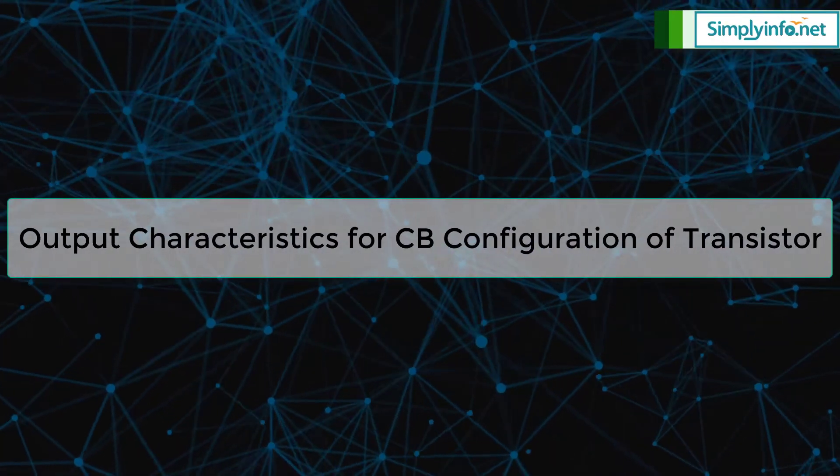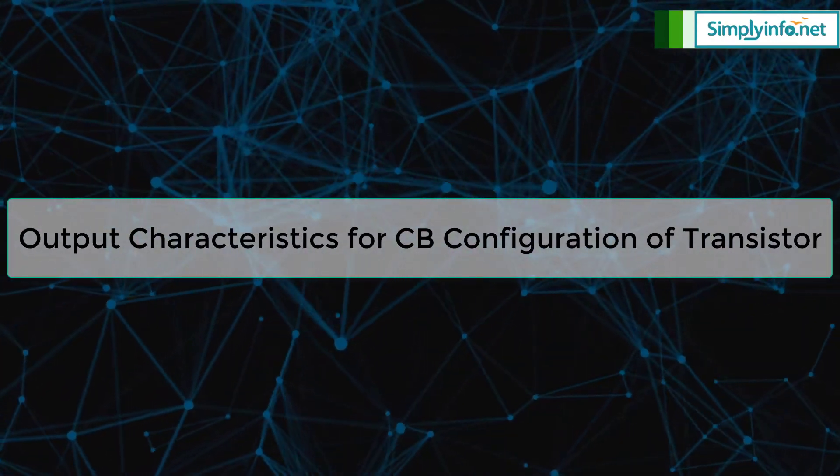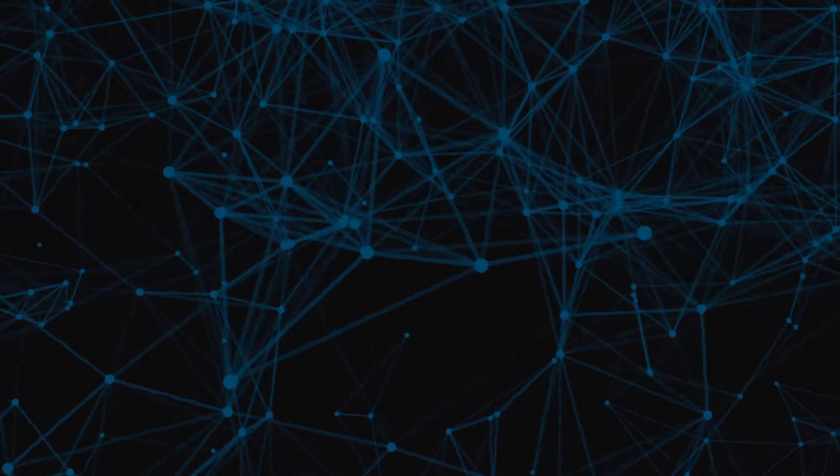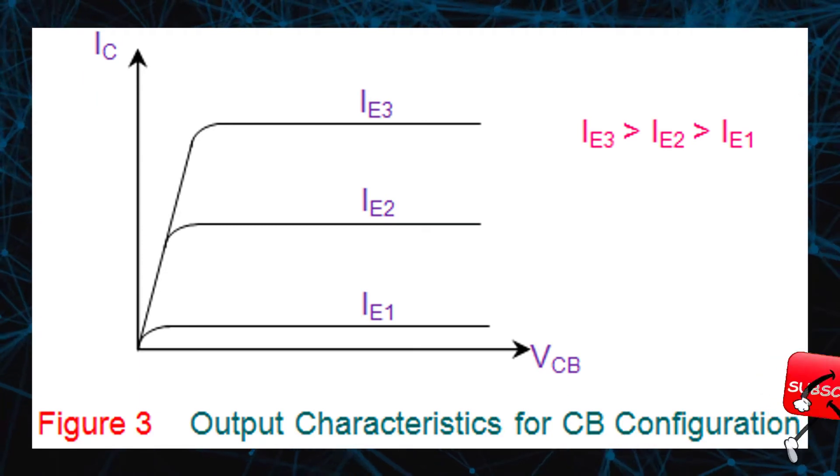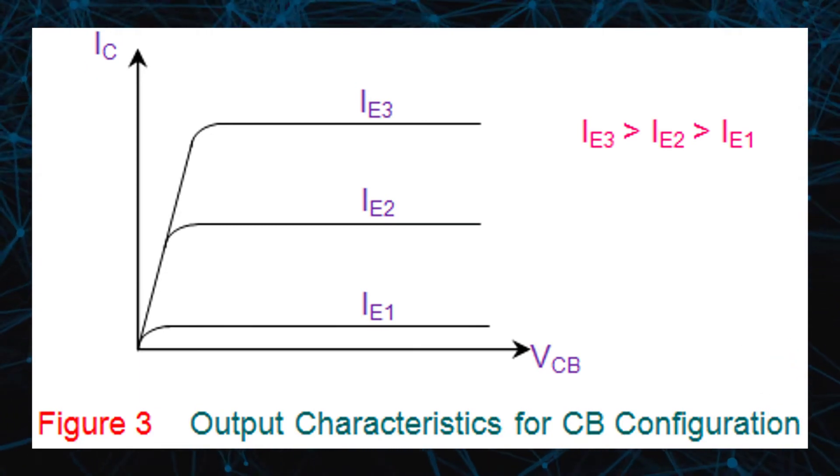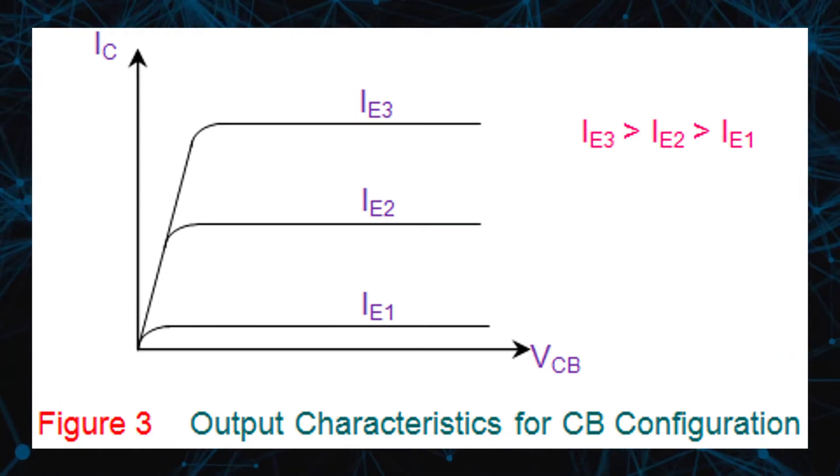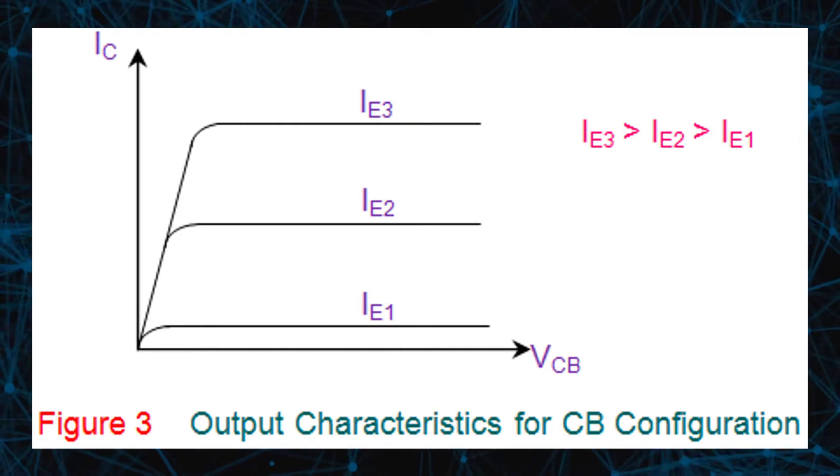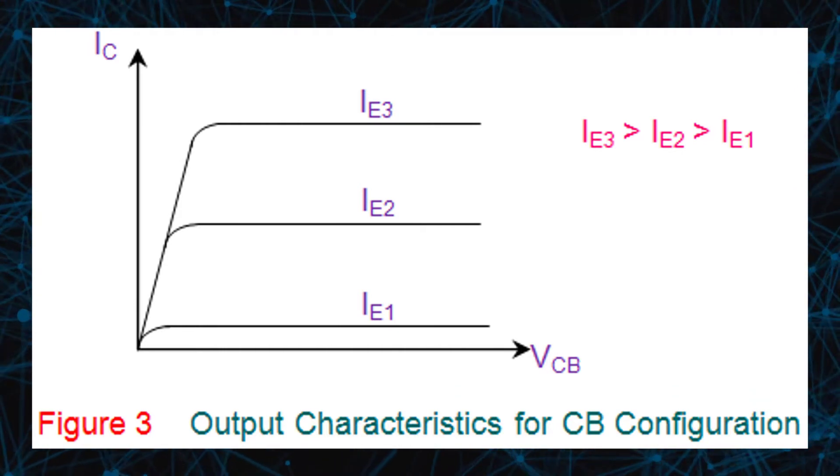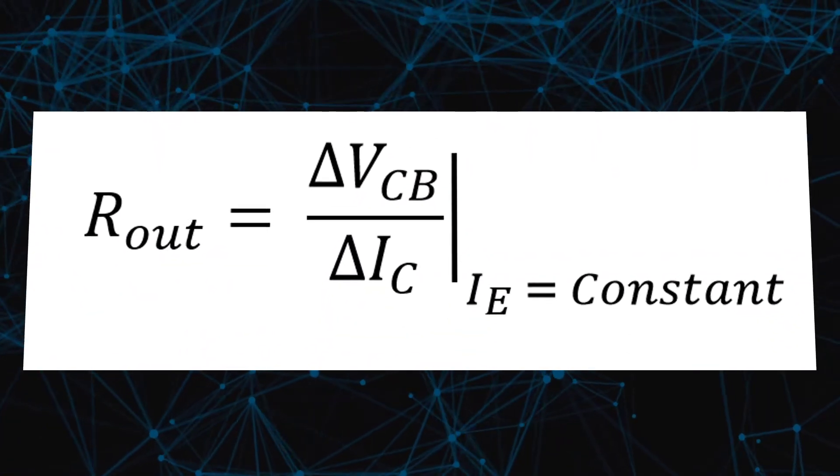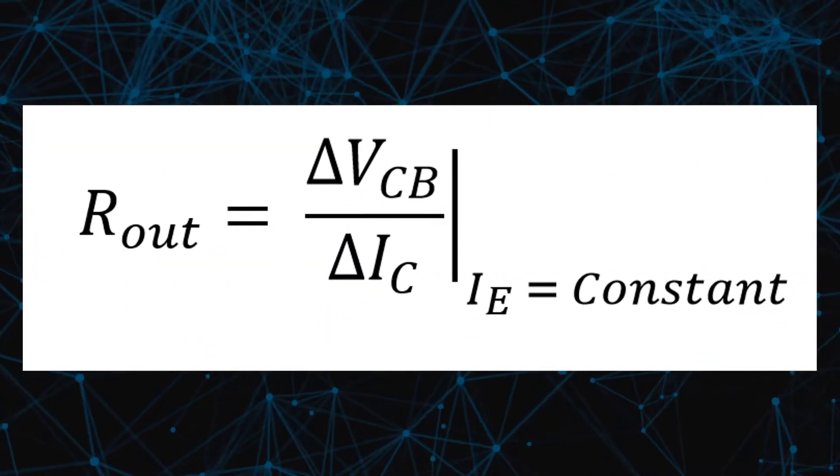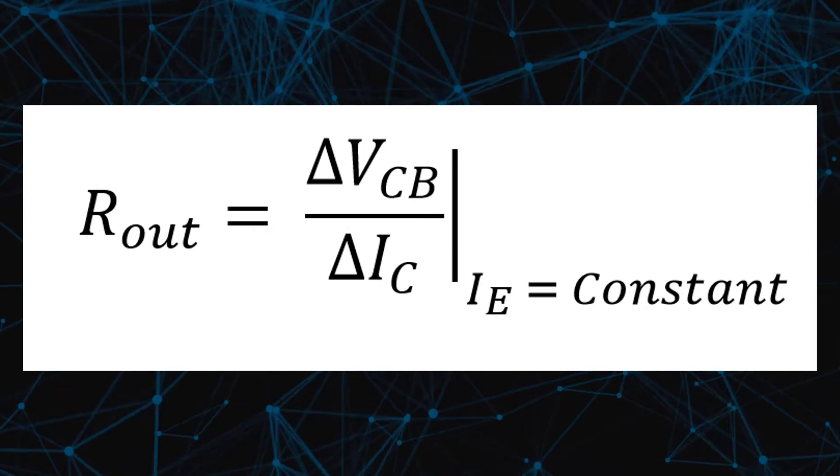Output characteristics for CB configuration of transistor. The output characteristics of CB configuration shows the variation of collector current IC with VCB when the emitter current IE is held constant. From the graph shown, the output resistance can be obtained as Rout equals delta VCB by delta IC, where IE is constant.